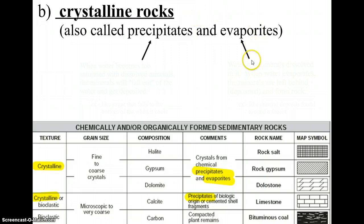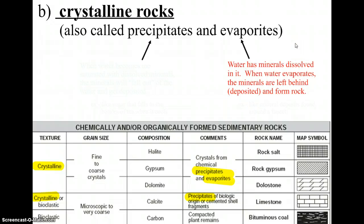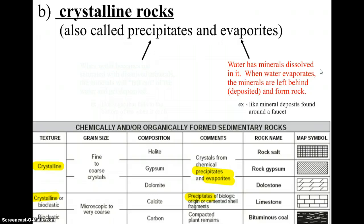The process where evaporates form has to do with evaporation. Oftentimes water will have minerals dissolved in it. Water will evaporate when it gets heated up by the sun, but minerals in it cannot evaporate, so they are left behind and deposited, turning into rock. Some of you may have noticed around faucets in your house — especially bathtub faucets — a greenish, bluish, or orangish crust. Those are actually minerals from your water that have been deposited on the faucet.